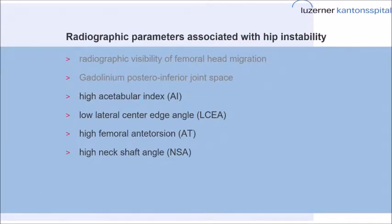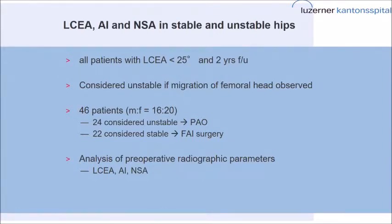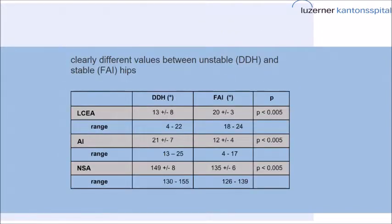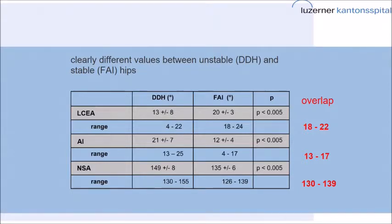There are other radiographic parameters associated with hip instability which are less clear: a high acetabular index, low center edge angle, high femoral antetorsion, and a high neck shaft angle. We looked at patients with an LCE angle less than 25 degrees, considered unstable if migration of the femoral head was observed — 24 hips considered unstable underwent PAO, and 22 considered stable had impingement surgery. The difference between LCE angle, acetabular index, and neck shaft angles was highly significant across groups. The problem is there is overlap between values — for instance, with a lateral center edge angle between 18 and 22 degrees, hips were either unstable or stable. Similarly for the acetabular index, we have a range where we don't know how to classify those patients.